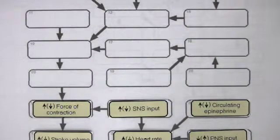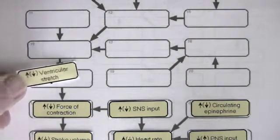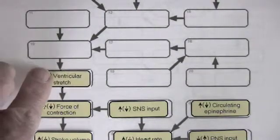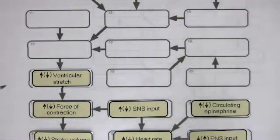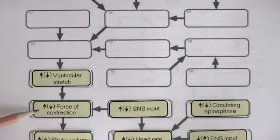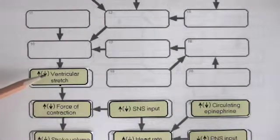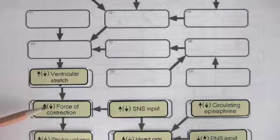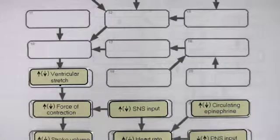As we saw with Starling's Law, force of contraction is determined by ventricular stretch. An increase in ventricular stretch increases force of contraction. Conversely, if ventricular stretch decreases, force of contraction decreases. What affects ventricular stretch?